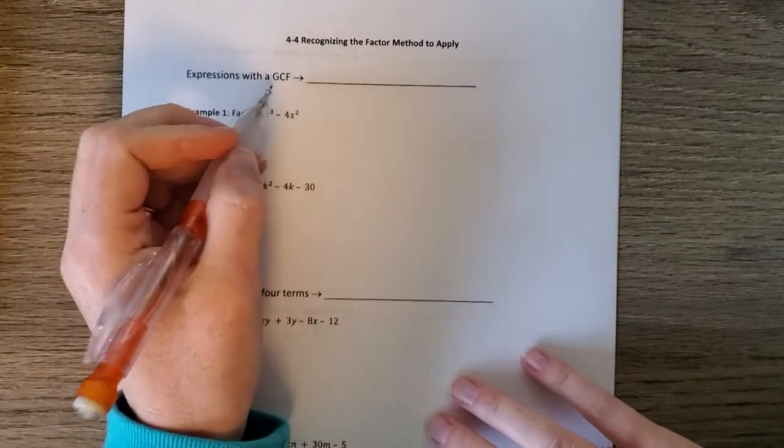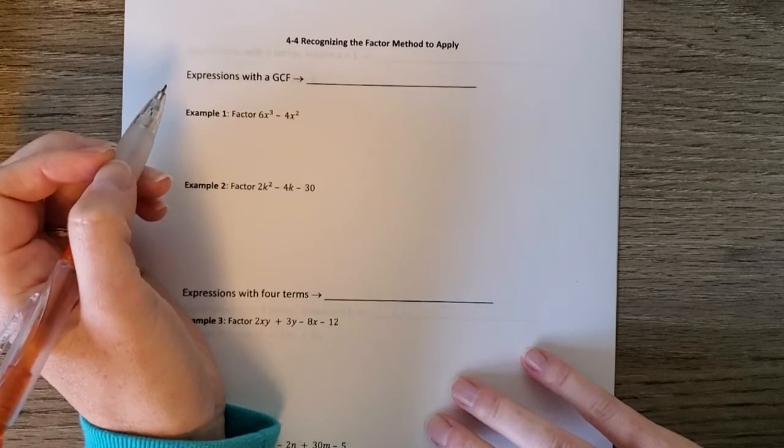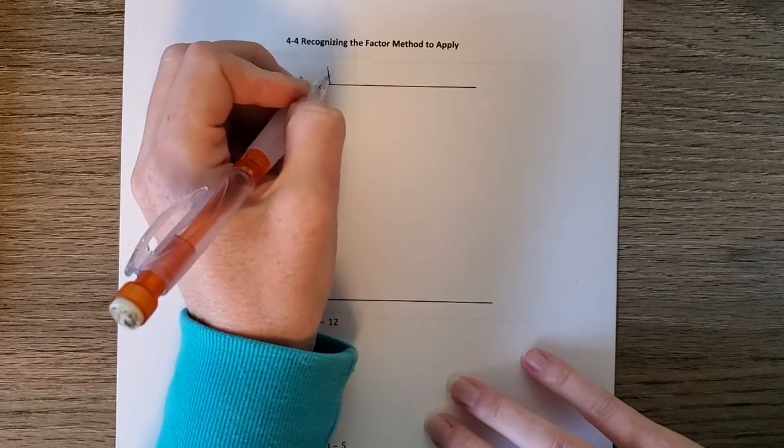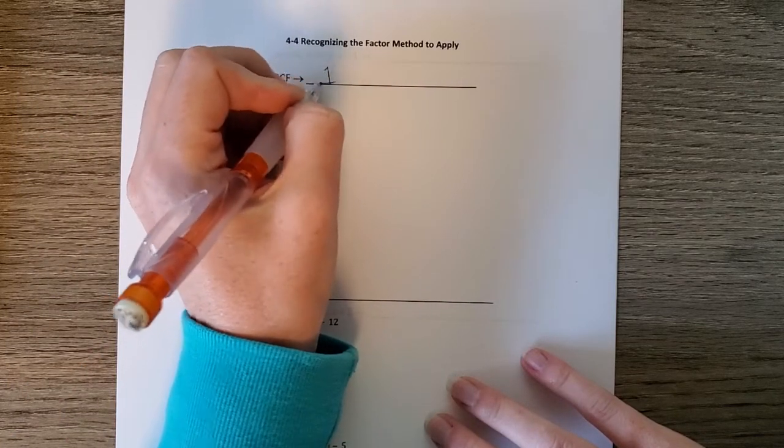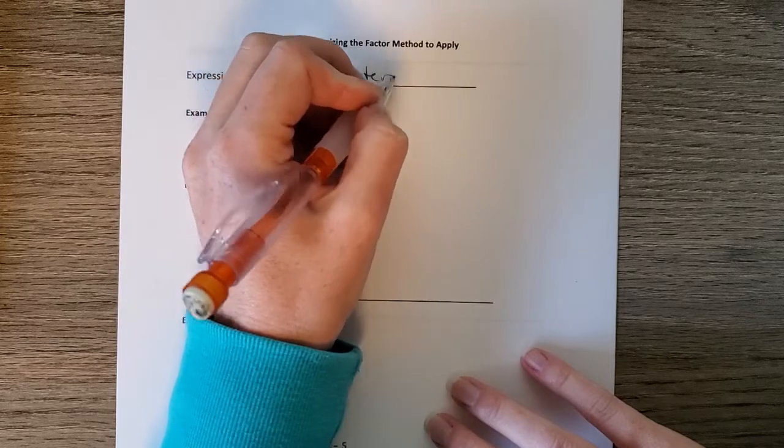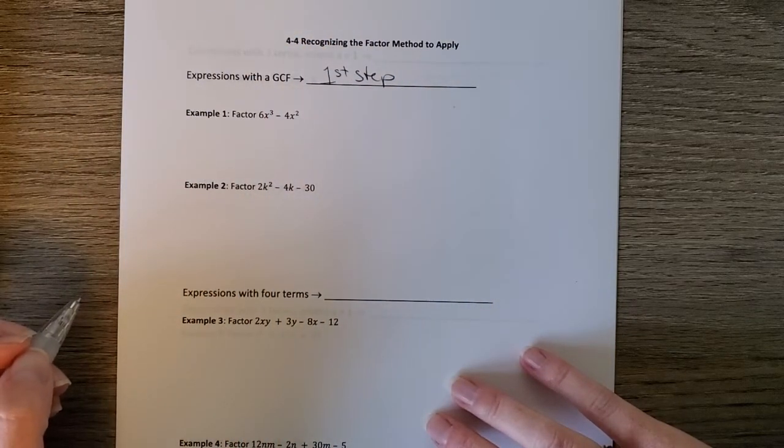So the first thing is your expression with a GCF. Anytime you have expression with a GCF, make sure this is the first step. So it might not be the only type of factoring, but you're going to start with doing GCF, and then if you can do anything further, then you'll continue.